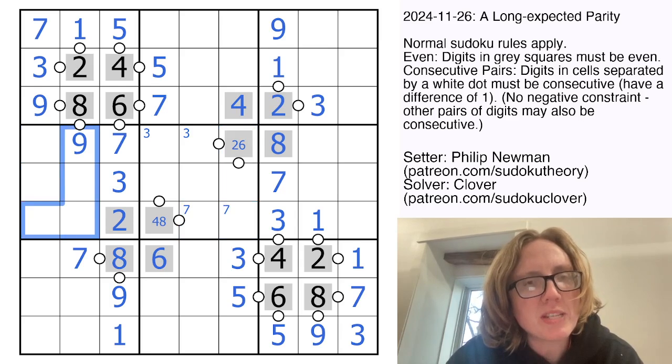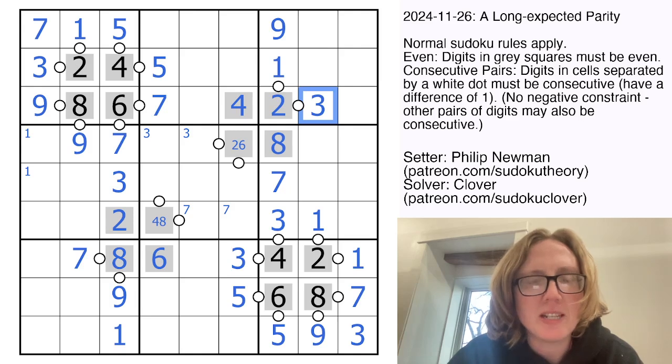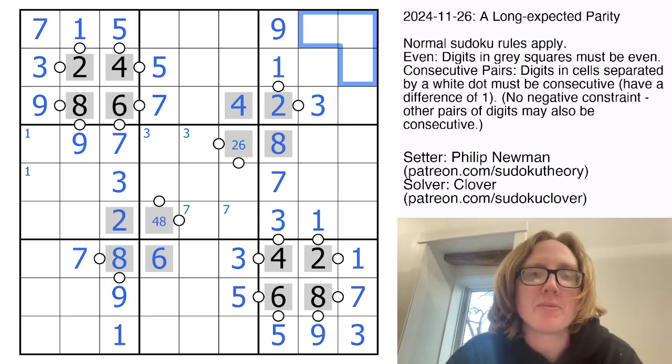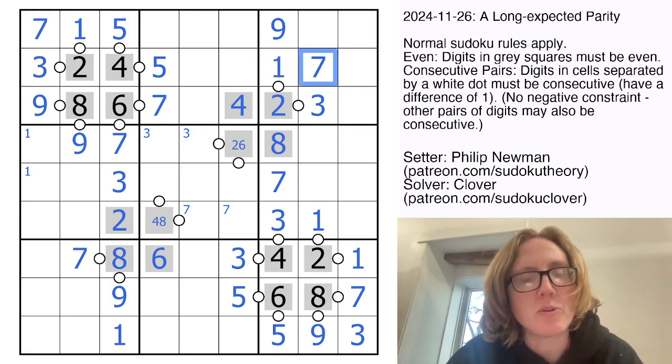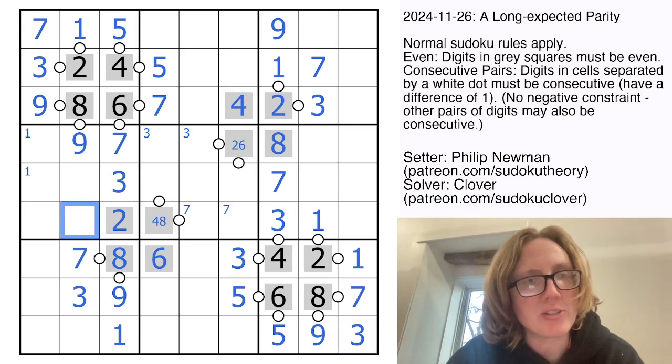Now we've got 1s there and there, so there's a 1 in one of those cells. How about 7 in this corner region? I have a 7 there and a 7 there, so I have a hidden 7 in the region that's going to go right there. And symmetrically here, I have a 3 here and a 3 here, and so I have a hidden 3 in this region that's going to go right there.